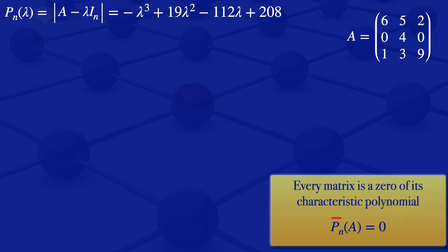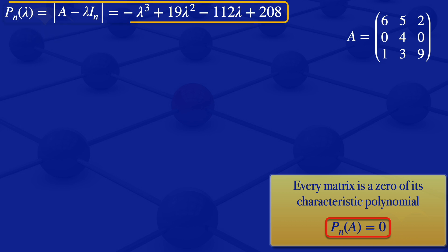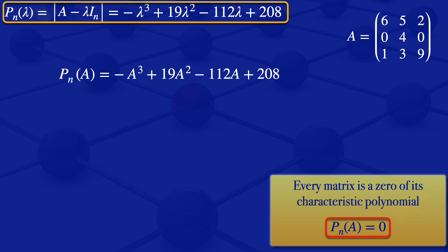What the Cayley-Hamilton theorem states is P(A) = 0. So we need to substitute A where we have lambda in this equation. When we do that, we get P(A) = minus A cubed plus 19 A squared minus 112 A plus 208.